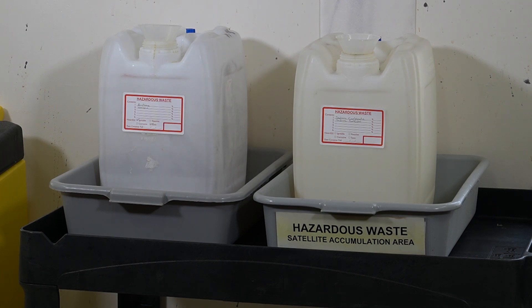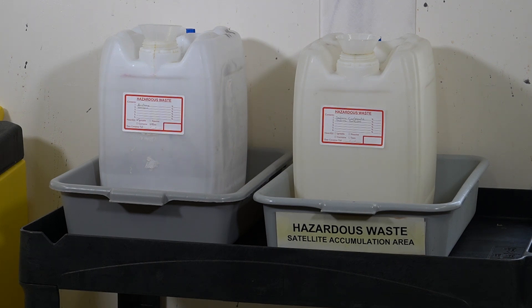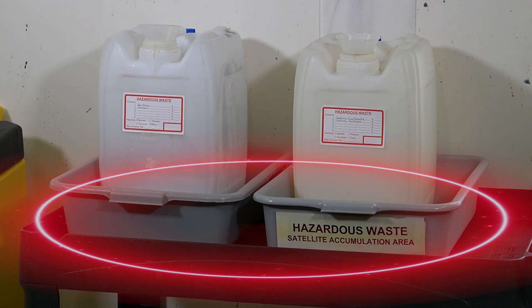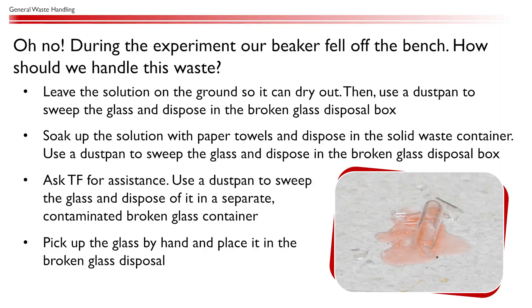Liquid waste bins host all the solution waste we produce during lab work, and these bins are typically kept in a designated waste satellite accumulation area in the lab. Oh no! During the experiment, our beaker fell off the bench. How should we handle this waste?